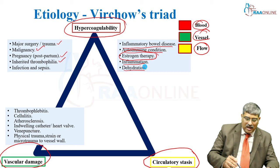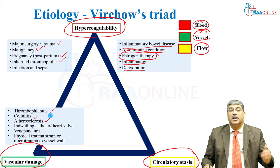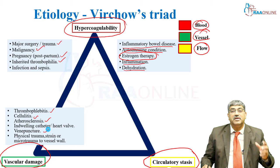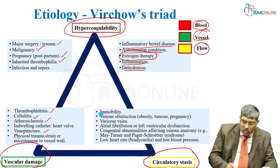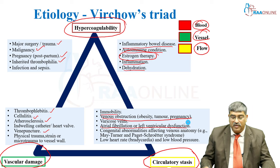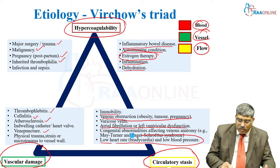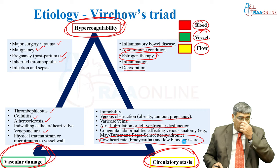Vascular damage happens with thrombophlebitis, inflammation of the venous system, cellulitis, atherosclerosis, indwelling catheter for a long time, placement of heart valves, venipuncture, physical trauma, strain, or micro-trauma to the vessel wall. Circulatory stasis occurs when blood flow is slightly slow — immobility due to fracture, venous obstruction, obesity, tumor, pregnancy, varicose veins, atrial fibrillation or left ventricular dysfunction, congenital abnormalities, and bradycardia or hypotension. So hypercoagulability, vascular damage, and circulatory stasis together form Virchow's triad for thrombus formation.